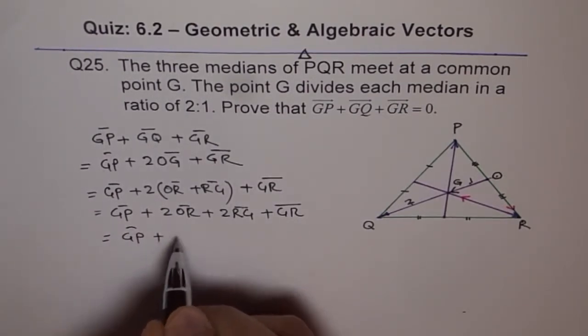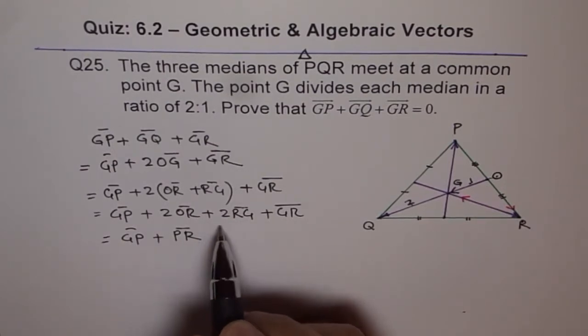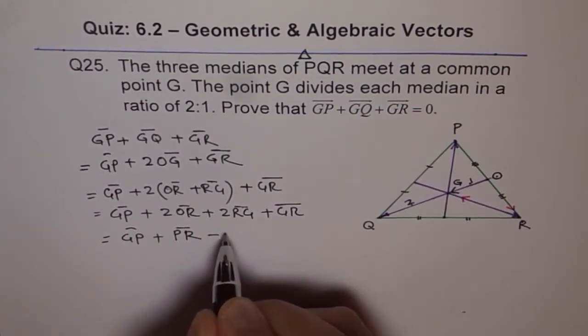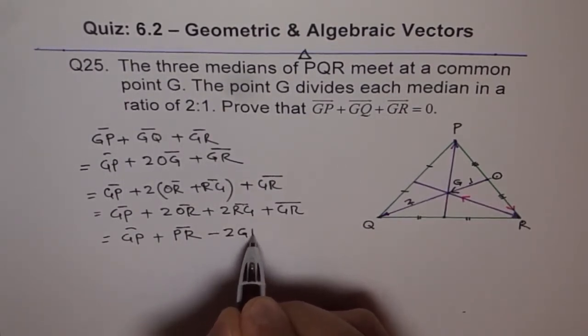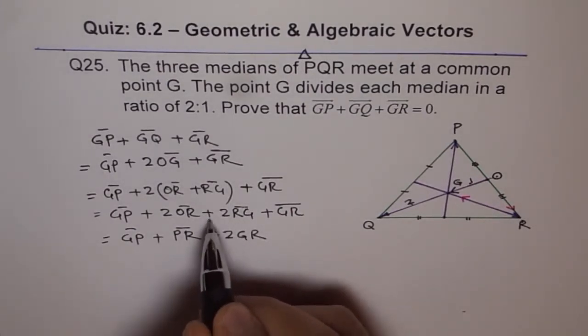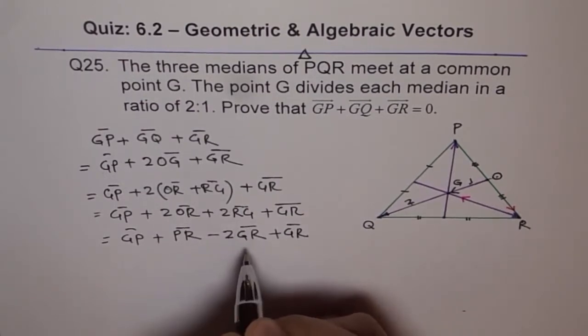The GP plus PR and 2 times RG could be written as minus 2 times GR. We can just flip it and we change the direction. This becomes negative, plus GR.